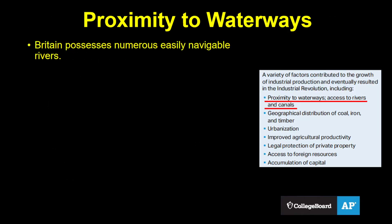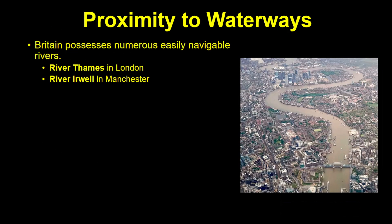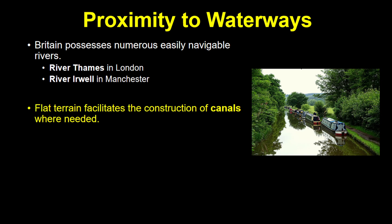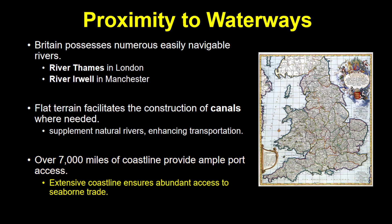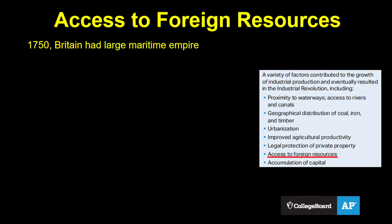Britain has many easily navigable rivers, such as the Thames that flows through London and the Irwell through Manchester. Britain's land is largely flat, so canals were easily built where rivers did not already exist. And it is also an island with over 7,000 miles of coastline, meaning it has many ports that give it ample access to seaborne trade.